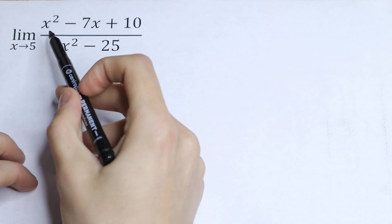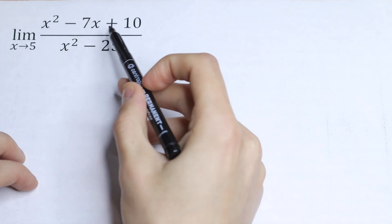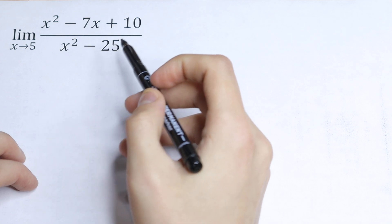What is the limit as x approaches 5 of the function x squared minus 7x plus 10, all over x squared minus 25?